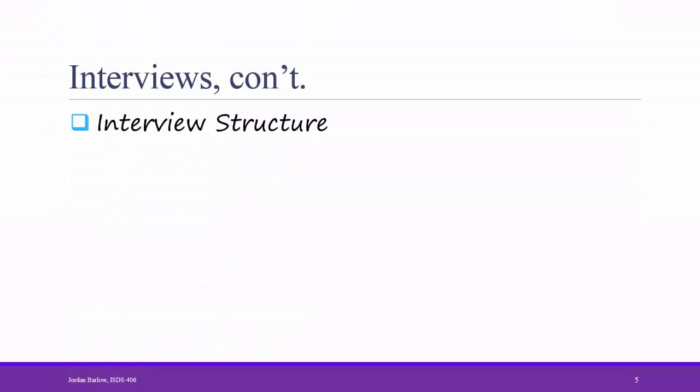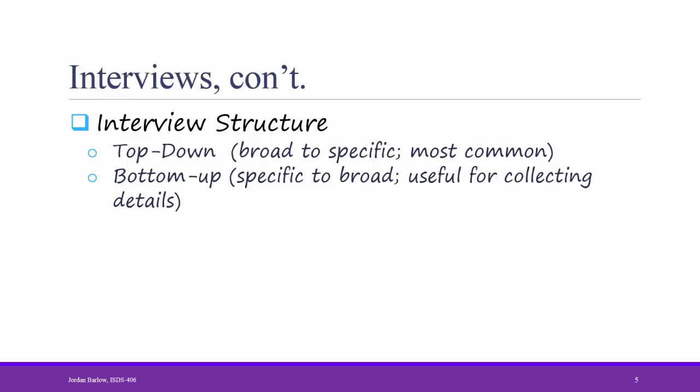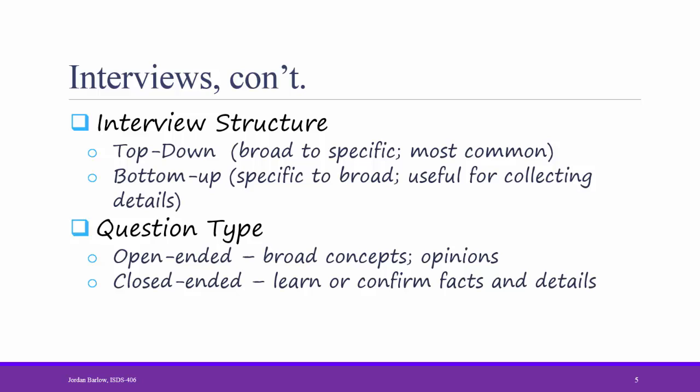There are several ways to structure an interview. The most common way is the top-down approach — start with really broad questions and then get more specific. Another way is the bottom-up approach, which is useful for collecting details. There are three types of questions you can ask in interviews. There are open-ended questions, good for finding out broad concepts and opinions, and closed-ended questions, good for confirming facts and details. It's good when using the top-down approach to start with open-ended questions and then move to closed-ended questions.